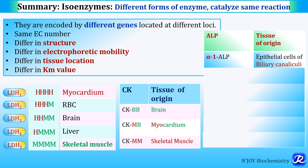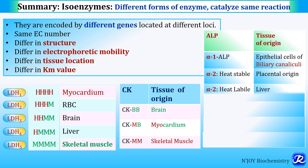Alpha-2 heat stable is of placental origin and is physiologically increased in pregnancy. Alpha-2 heat labile (L for liver) is present in hepatocytes and is increased in hepatic injury including infectious hepatitis, alcoholic hepatitis, and hepatocellular carcinoma — the increase is 2 to 3 times the normal reference range.